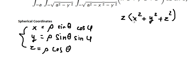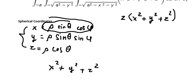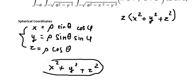And now we have x squared plus y squared plus z squared. So if we put this one in here and we simplify, we get rho squared.